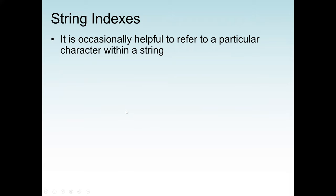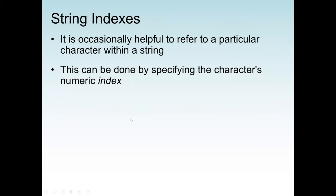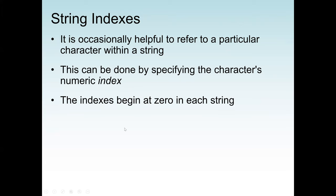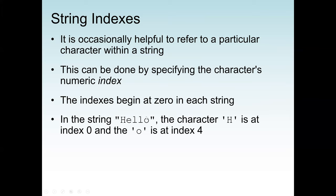It is occasionally helpful to refer to a particular character within a string. This can be done by specifying the character's numeric index. Indexes always begin at zero in each string — the same as arrays. For example, in the string 'HELLO', the first character H is at index zero, E is at index one, then L, L, and O at index four. This means the string has five characters, indexed from zero to four.